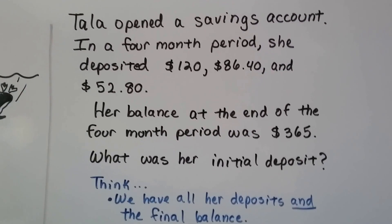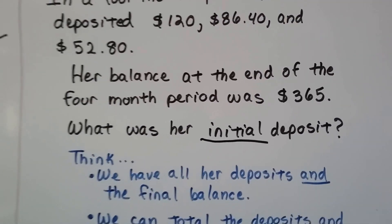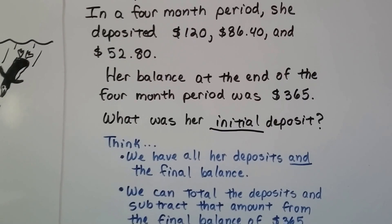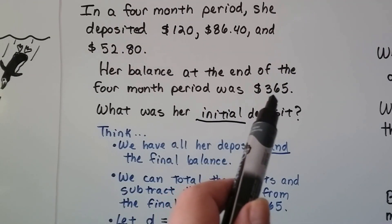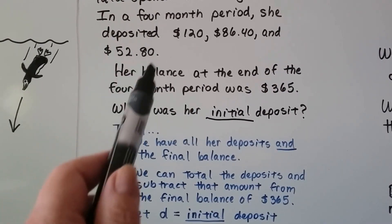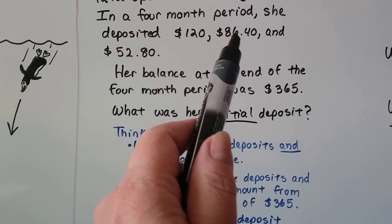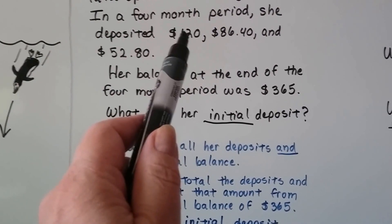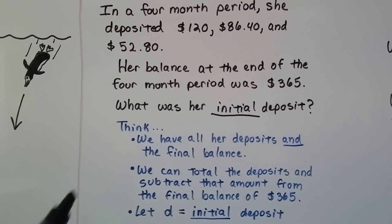Now, whenever you see a word problem asking for an initial amount, you could actually work backwards. You could take that final balance of $365 and subtract the $52.80. And then from that amount, you could subtract the $86.40. And from that amount that you get, you could subtract the $120 and get that initial amount.